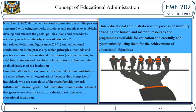This definition denotes that education can only be an asset to individuals and society at large through true administration. Work or (1980) defined educational administration as the process of using methods, principles and practices to establish, develop and execute the goals, policies, plans and procedures necessary to achieve the objectives of education.